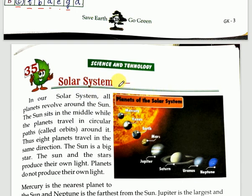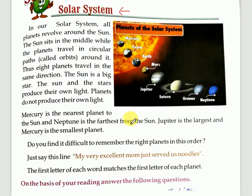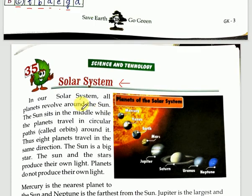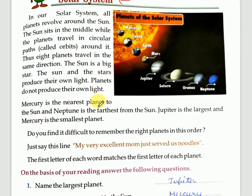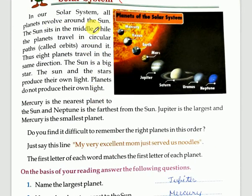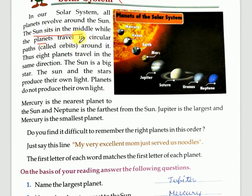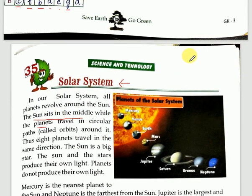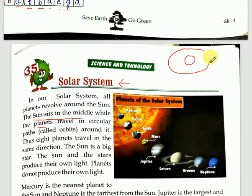You have already studied the Solar System in SST. In our solar system, all the planets revolve around the sun. The sun sits in the middle while the planets travel in a circular path. This circular path is called an orbit.